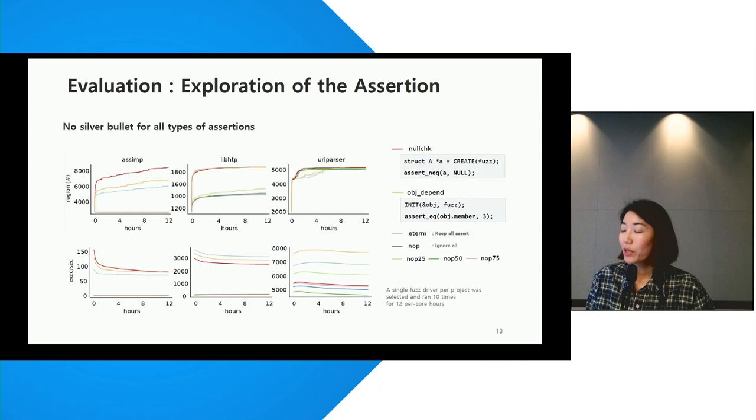We studied the efficacy of assertion checks in terms of coverage and execution per second. Our initial hypothesis was that keeping all assertions or ignoring them all would reveal some patterns, but the results were different from what we expected. To further investigate this, we added more rules and chose libraries with various code characteristics.